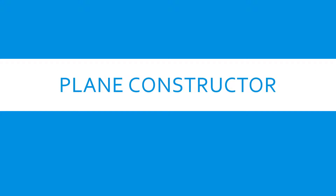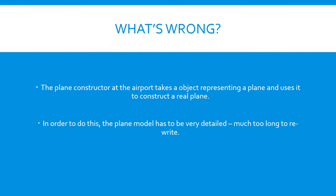Now you've had a chance to practice your inheritance skills, let's have a go at putting them to the test in fixing the plane constructor. So what's wrong? The plane constructor at the airport takes an object representing a plane and uses it to construct a real plane.